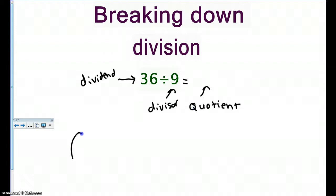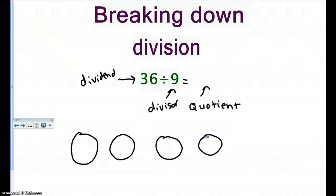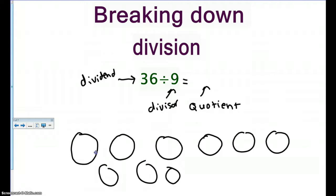I'm going to draw nine circles to break this down. I drew nine circles — one, two, three, four, five, six, seven, eight, nine. To break this down, I'm going to start counting by threes: three, six, nine, twelve, fifteen, eighteen, twenty-one, twenty-four.